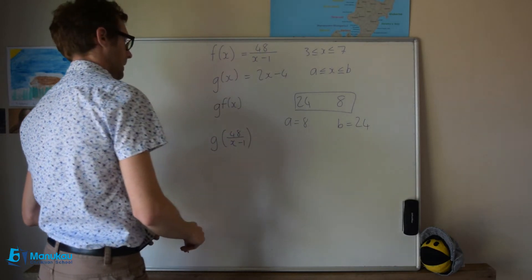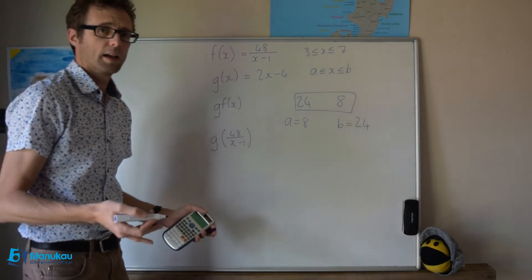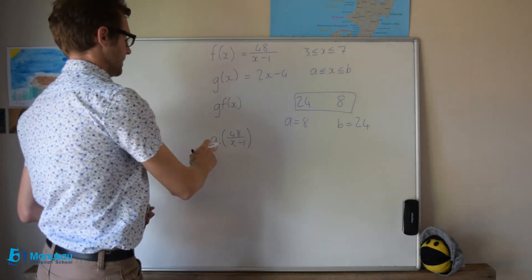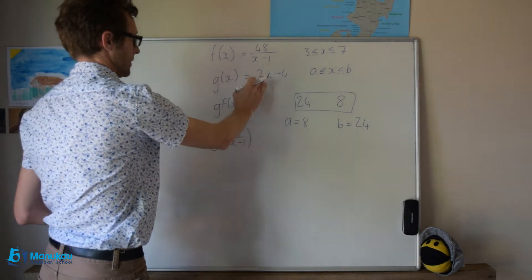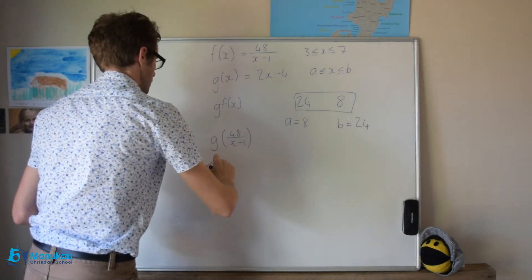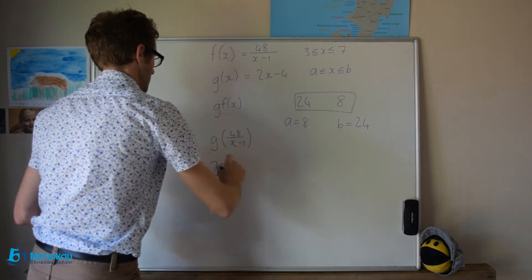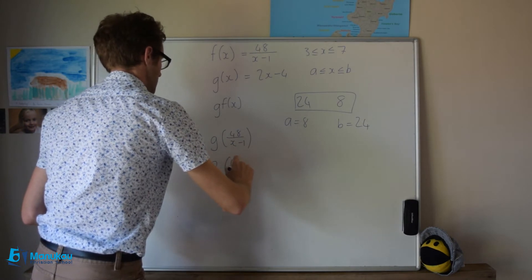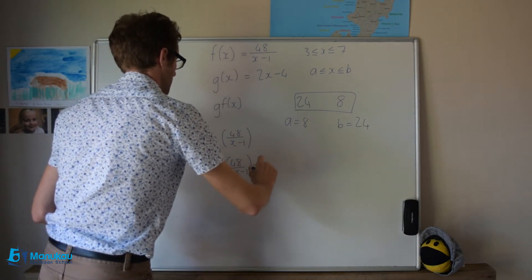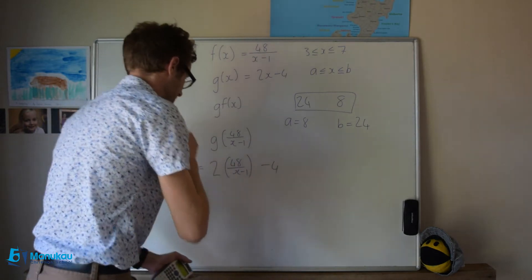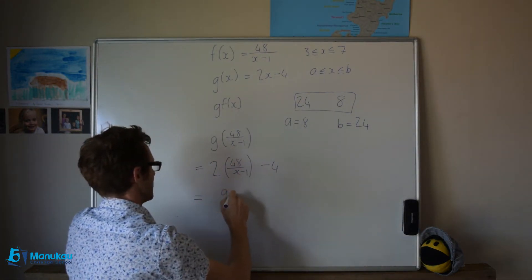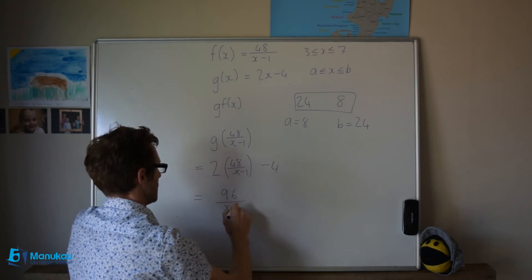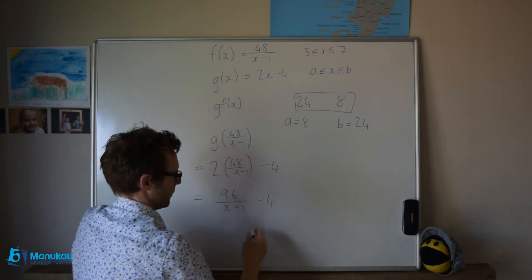And then we put in this value as x into our g. So this will be 2 into 48 over x minus 1, all minus 4, and so that will be 96 all over x minus 1 minus 4.